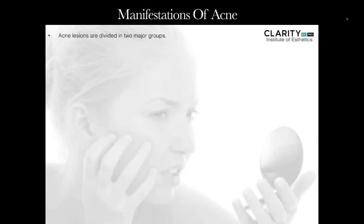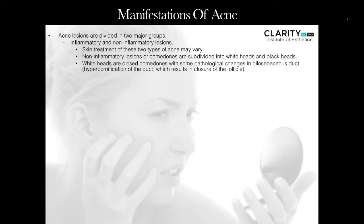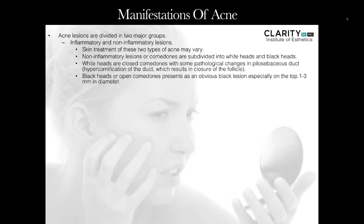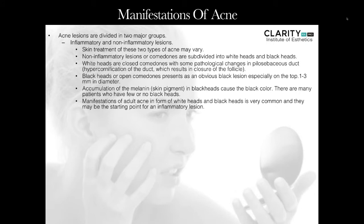Acne manifestations are divided into two major groups: inflammatory and non-inflammatory lesions. Non-inflammatory lesions, or comedones, are subdivided into whiteheads and blackheads. Whiteheads are closed comedones with lots of filament and debris within the pore. Blackheads, or open comedones, appear as obvious black lesions ranging from 1 to 3 millimeters in diameter — the black color is caused by accumulation of melanin through oxidation. Whiteheads and blackheads may be a starting point for more inflammatory acne if left untreated, so clients should come in for regular facials with thorough extractions.